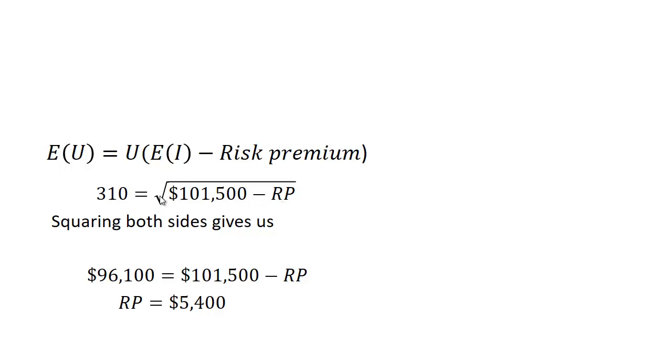Subtract out the risk premium, and remember the utility function is to take the square root of that. To get rid of the square root, we square both sides. So we get $96,100 equals $101,500 minus RP. Solving for RP, we get $5,400.